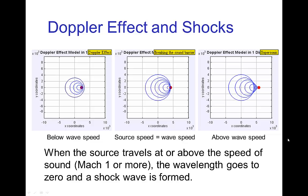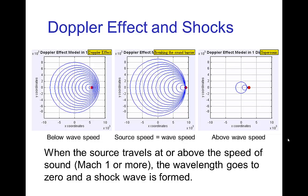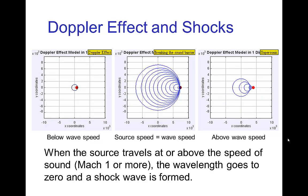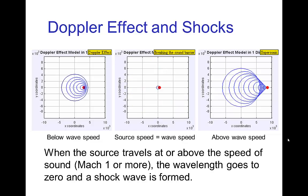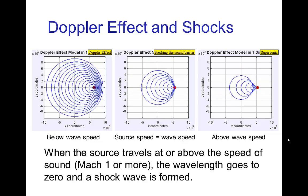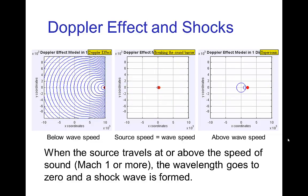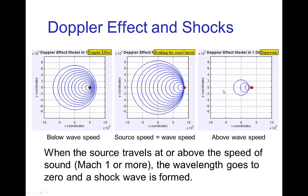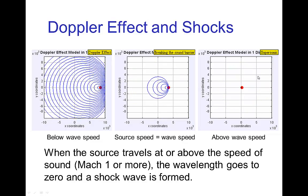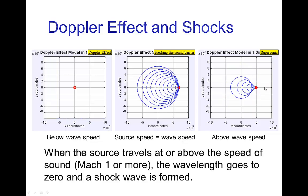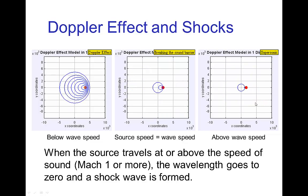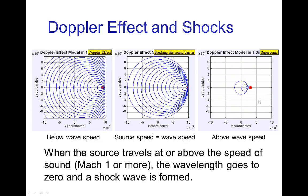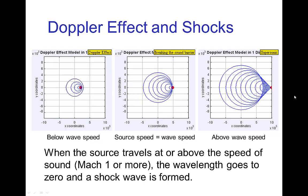If the source of waves is moving at least as fast as the waves, or faster, then the wavefronts coming from the source are distorted into a cone shape. The edge of the cone, where all the different wave fronts pile up, is actually a shock front.